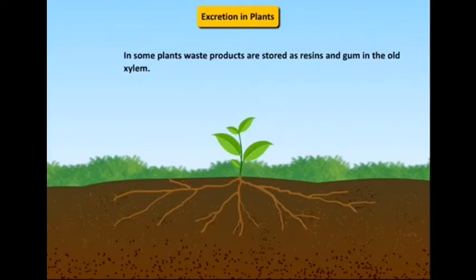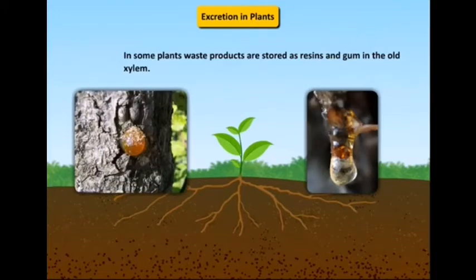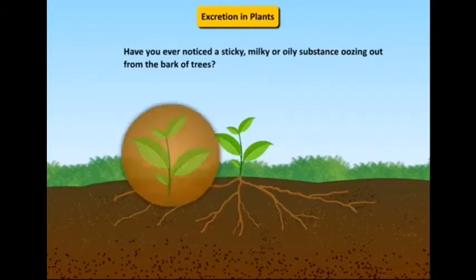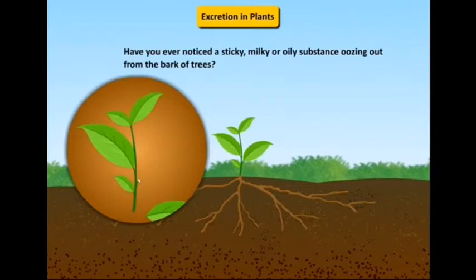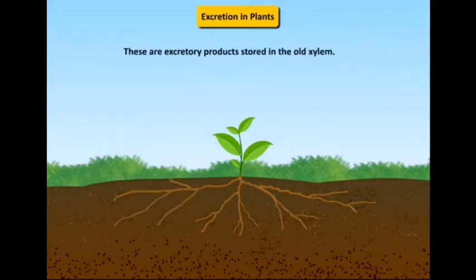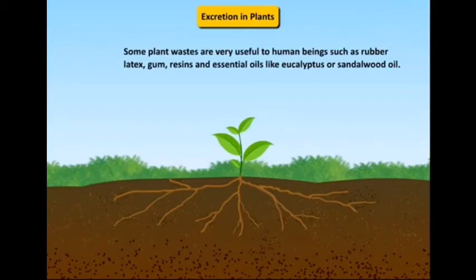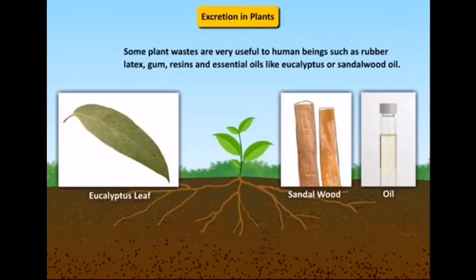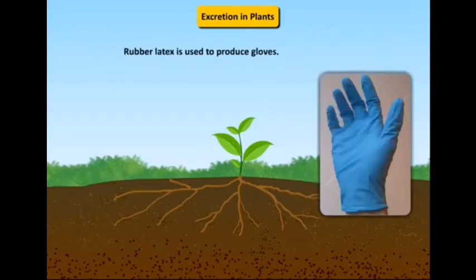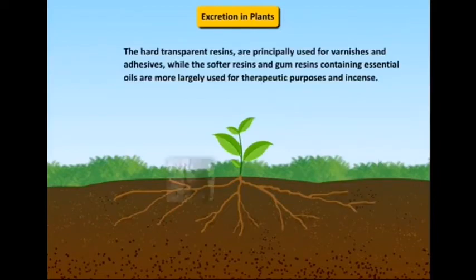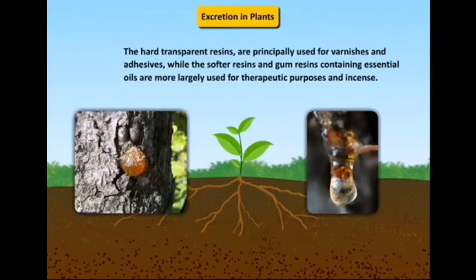Plant cells have comparatively large vacuoles where many waste products are stored. Some waste products are stored in leaves and fruits and are removed as leaves and fruits fall off. In some plants, waste products are stored as gums and resins in old xylem — sticky or oily substances that ooze out when a stem or leaf is cut. Plants also excrete some waste substances into the soil. Some plant waste products are useful to humans, such as rubber latex, gums, resins, and essential oils like eucalyptus and sandalwood oil, used for making tires, varnishes, and for therapeutic purposes.